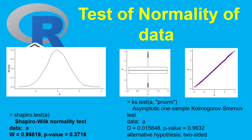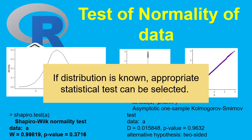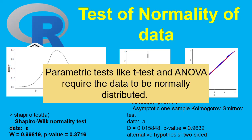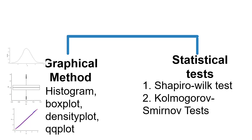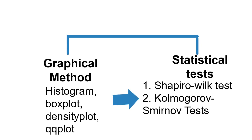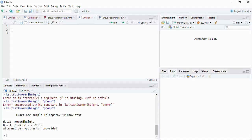Hello friends, welcome to this session on learning R programming. In this session we are going to learn how to test whether data is normally distributed or not. This is required many times because the distribution is the basis for applying specific statistical tests. T-test and ANOVA are parametric tests applied to normally distributed data. There are two types of methods: graphical methods and statistical tests — the most commonly used are the Shapiro-Wilk test and the Kolmogorov-Smirnov test.